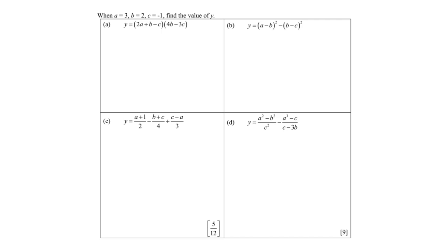Hello everyone, welcome to this video where we are given the value of a which is 3, b which is 2, and c which is negative 1. Find the value of y. For part a, y equals this algebraic expression involving a, b and c. Every time we evaluate an algebraic expression by substituting values in, we always try to put brackets — this is just a reminder for me.